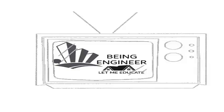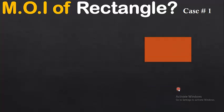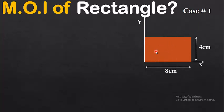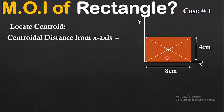Let's start with case number one, in which the reference axes are given adjacent to the rectangular figure. The dimensions are: base = 8 cm and depth = 4 cm. First, locate the centroid by bisecting both dimensions — the intersection point is the centroid. The centroidal distance from the x-axis, called k, is equal to 4 divided by 2, which gives k = 2 cm.